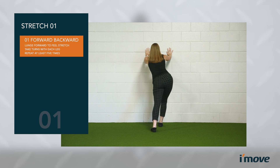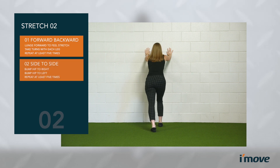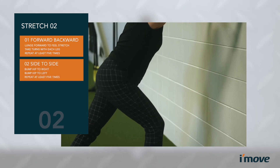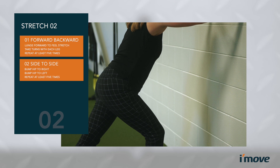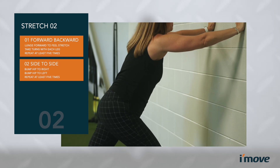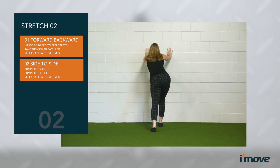The next stage of the stretch is to move side to side. You're visualizing your hips in a doorframe as you move right to left. Do that five times — you'll feel that calf stretch change a little bit as you move right to left.